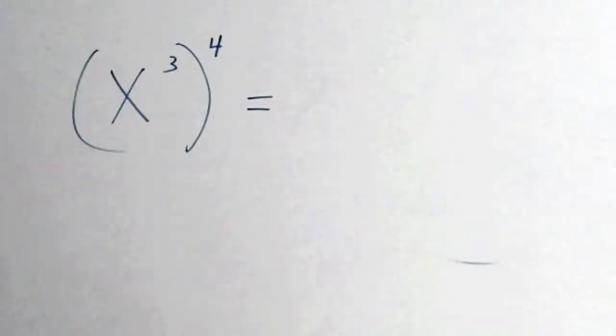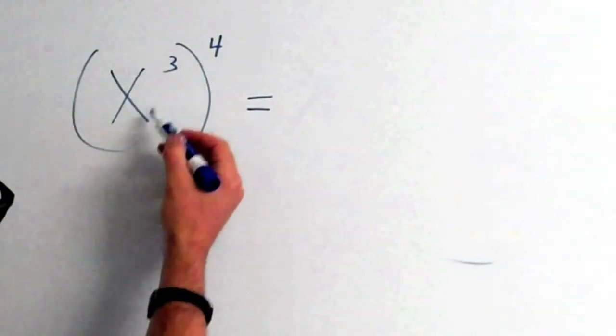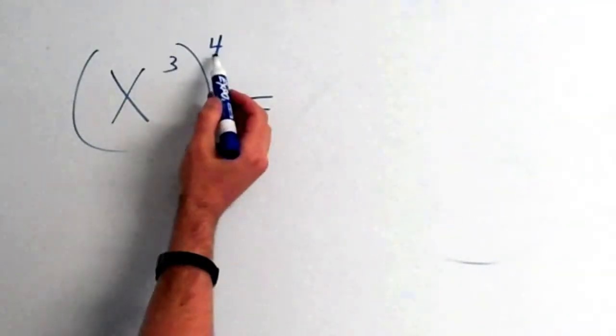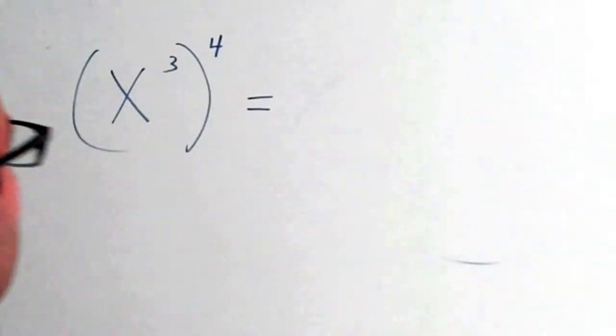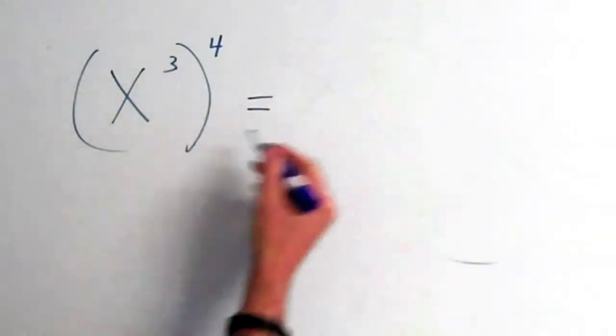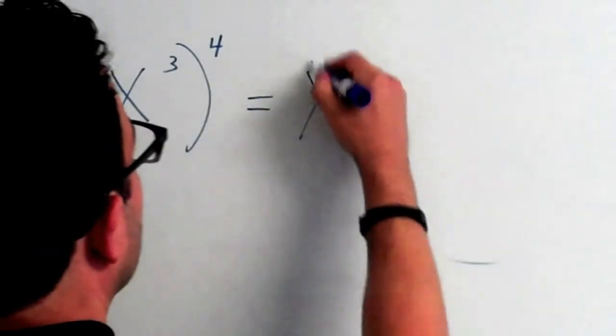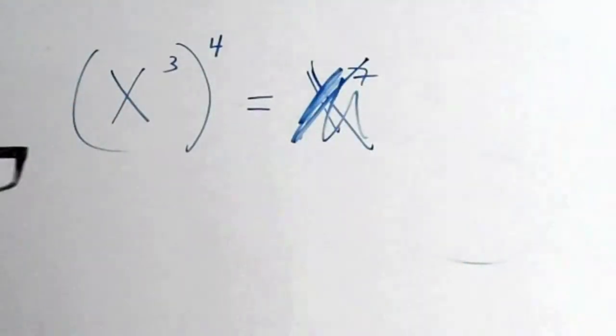Another exponent rule students confuse: if you take x cubed and you raise x cubed all to the 4th power, what they often do wrong is they will add these exponents. So they'll just say that's x to the 7th, but that's wrong. Let's get this straight once and for all.